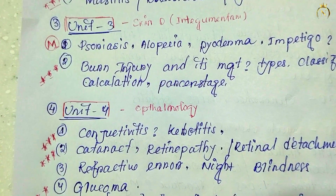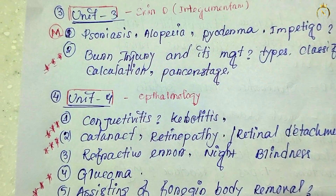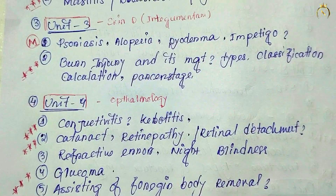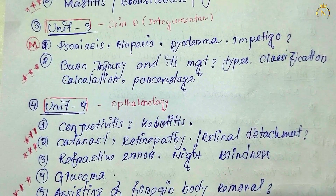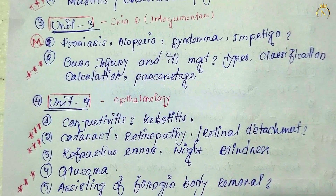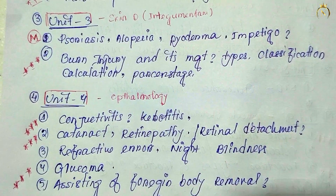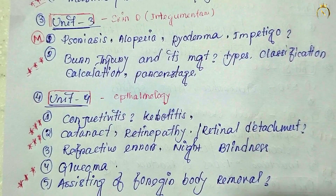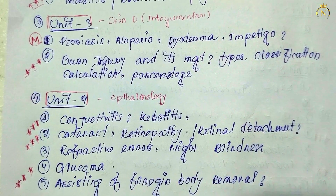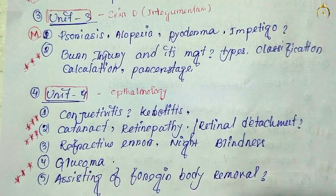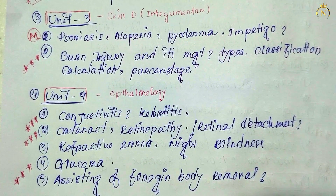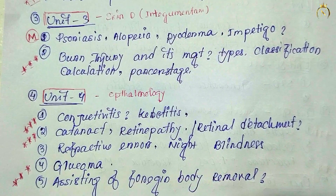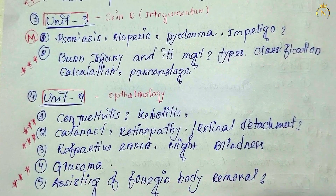From Unit 3, topics like psoriasis, alopecia, and scleroderma are important, but only short/meaning questions will come — no long questions. Burn injury treatment, calculations, and percentage — using the Rule of Nines — is the most important topic. Seven-mark questions will definitely come on this. Make sure you prepare it.